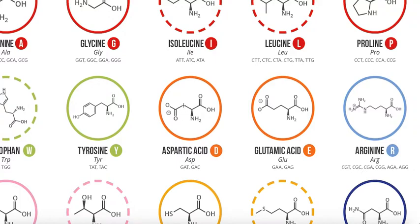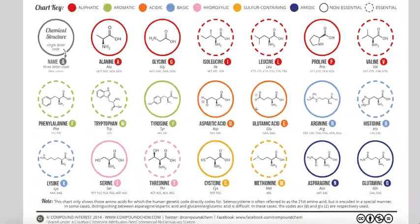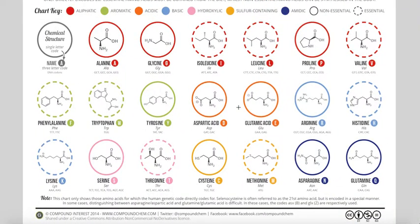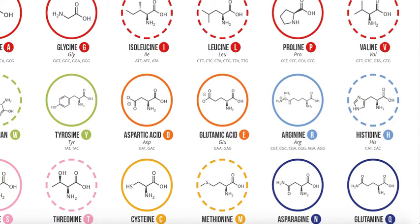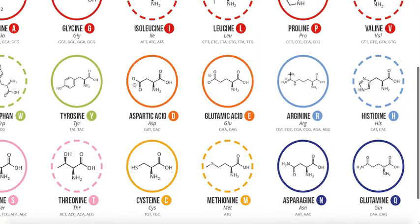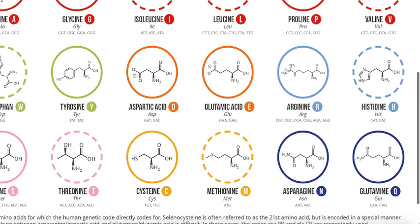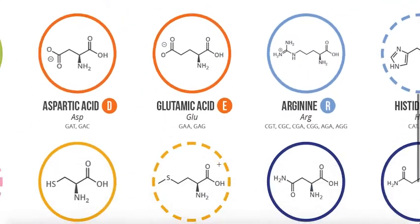Aspartate has one carbon and glutamate has two. These amino acids like to interact with ions — aspartate and glutamate interact with positive ions, and arginine, histidine, and lysine interact with negative ions. They can actually interact with each other, and these interactions are called salt bridges. The basic amino acids generally have a positive charge because their amino groups pick up hydrogens — the lone pair on the amino group is a nucleophile that attacks the electrophilic H+ in solution, which makes them positively charged.